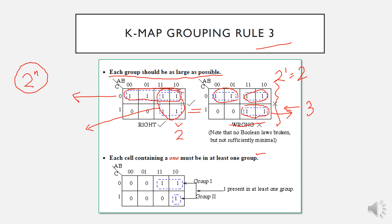Each cell containing a one must be in at least one group. Even if a cell appears isolated, we cannot leave it ungrouped. For example, if a cell contains one but all its adjacent cells are zero, we must still group it as a single cell on its own. Every one on the K-map must belong to at least one group.